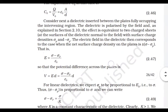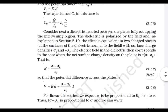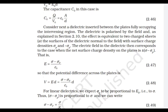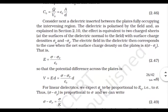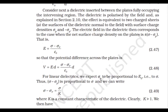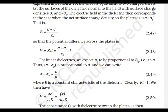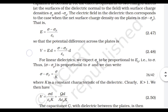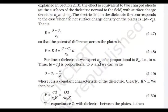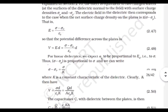The electric field with the dielectric present corresponds to a net surface density of σ - σₚ. So E = (σ - σₚ)/ε₀. The potential difference across the plates is V = (σ - σₚ)d/ε₀. For a linear dielectric, σₚ is proportional to E, and we can write σ - σₚ = σ/k.